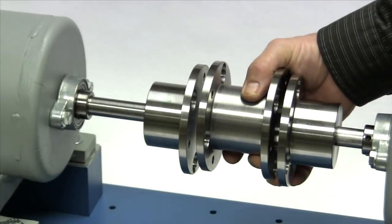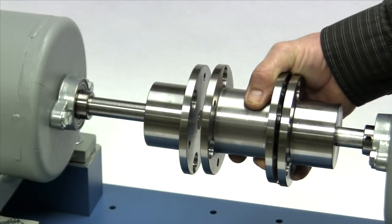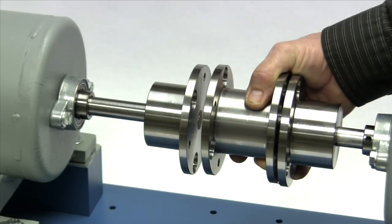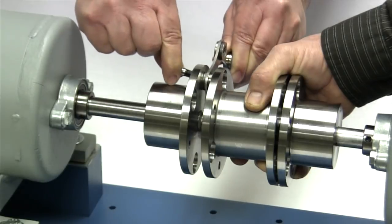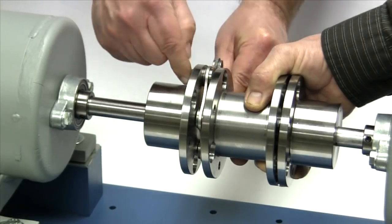Position the spacer between the two hubs. We are installing a relatively small coupling and can support the spacer by hand. Larger couplings may require slings or other methods supporting the weight of the spacer. While we support the spacer, slide a disc pack between the hub flange and the spacer flange.